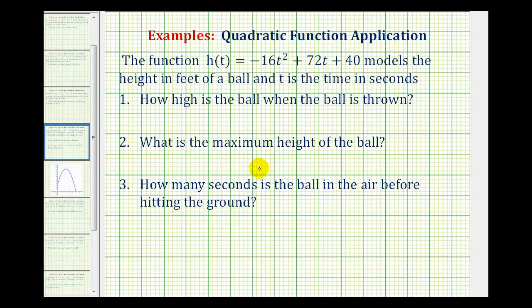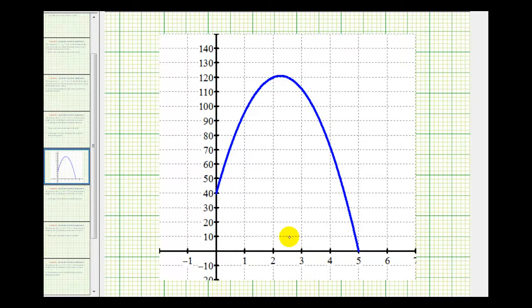To get a better idea of what's happening here, let's take a look at a graph of this function. But first recognize that we have a quadratic function, so the graph will be a parabola. And since a is negative, the parabola will open down. So here's the graph of our function. This would be the t-axis, which is time in seconds, and the y-axis is height in feet.